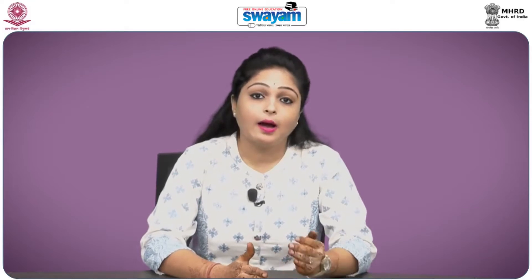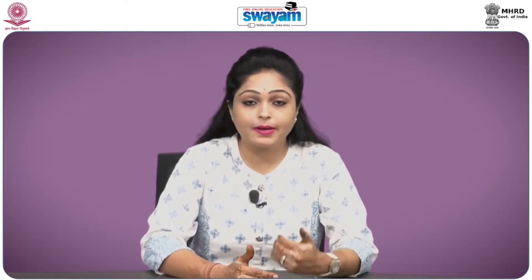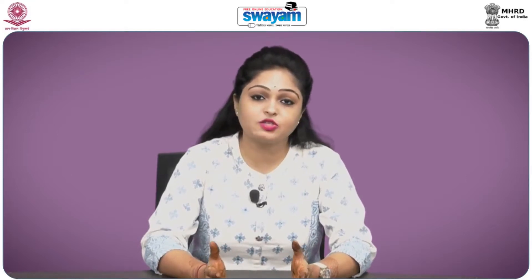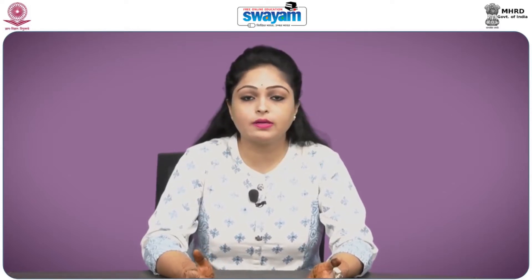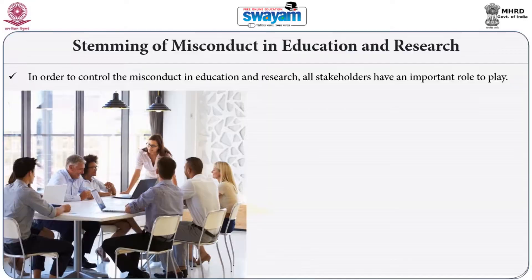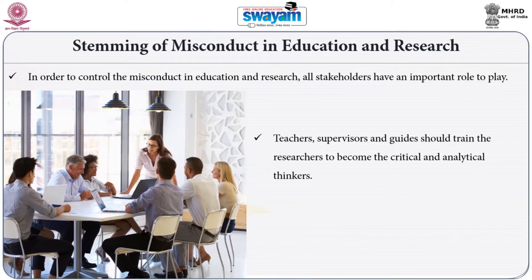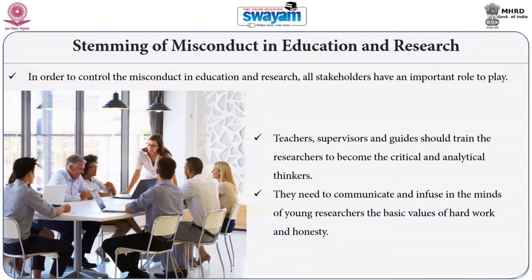So friends, up till now whatever we have studied in this third part of the module were the different reasons behind misconduct in either academics or research. Moving ahead, we will now discuss stemming of misconduct in academics and research. To prevent or to curb such misconduct, all the stakeholders play a very, very critical role. Teachers, supervisors and guides should promote the researchers to do critical and analytical thinking. All the stakeholders need to communicate and infuse in the minds of young researchers the basic values of hard work and honesty.